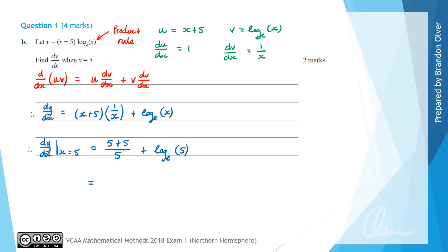So simplifying that down, this is just 10/5, which is 2, plus log_e(5). So that is the answer to part B of this question.